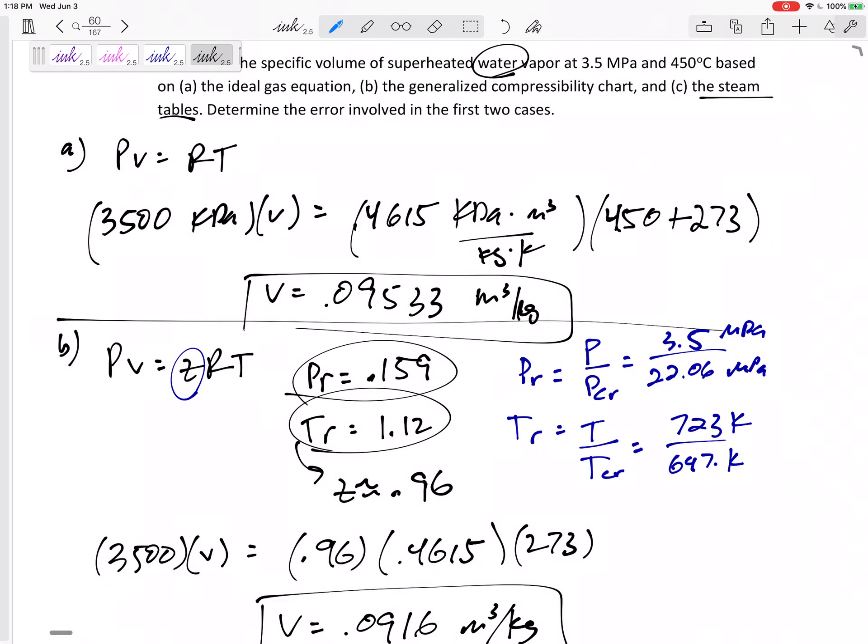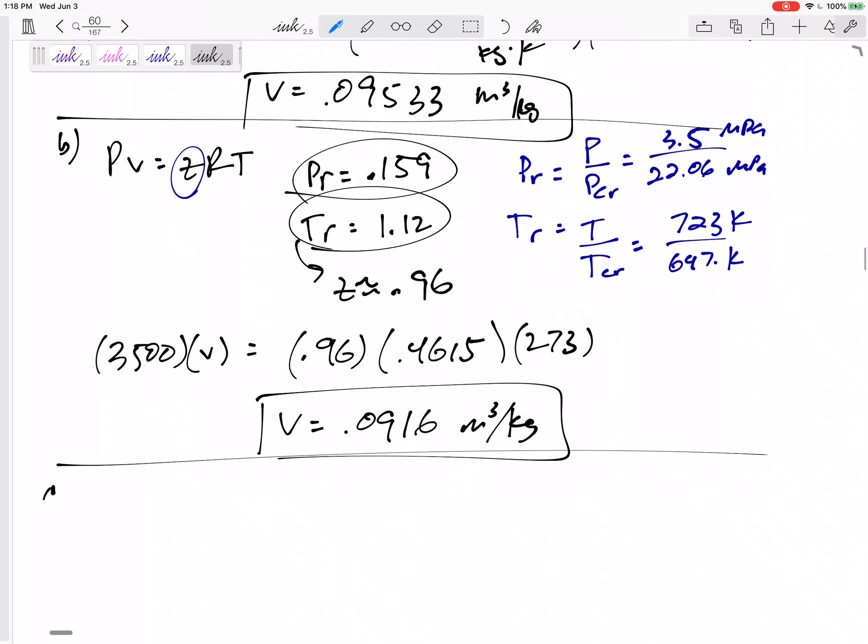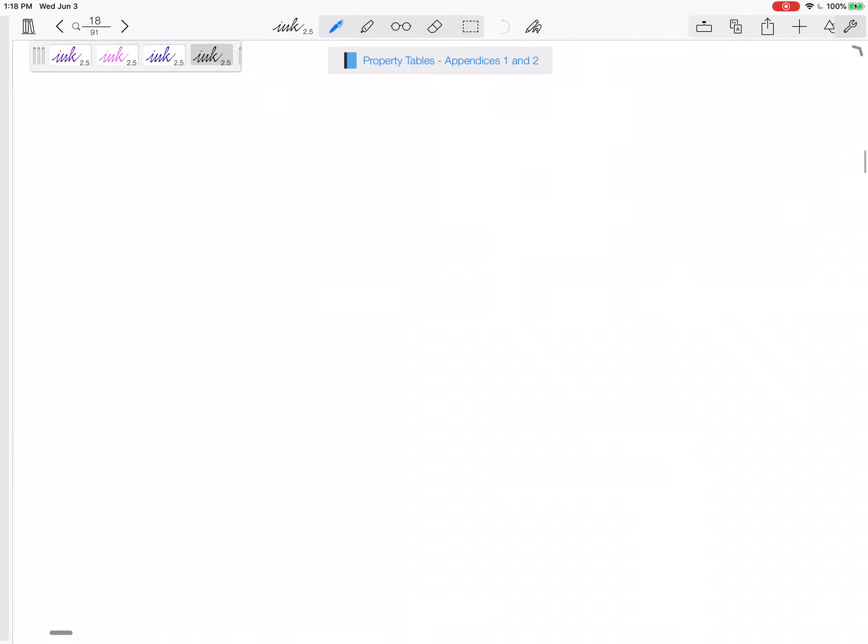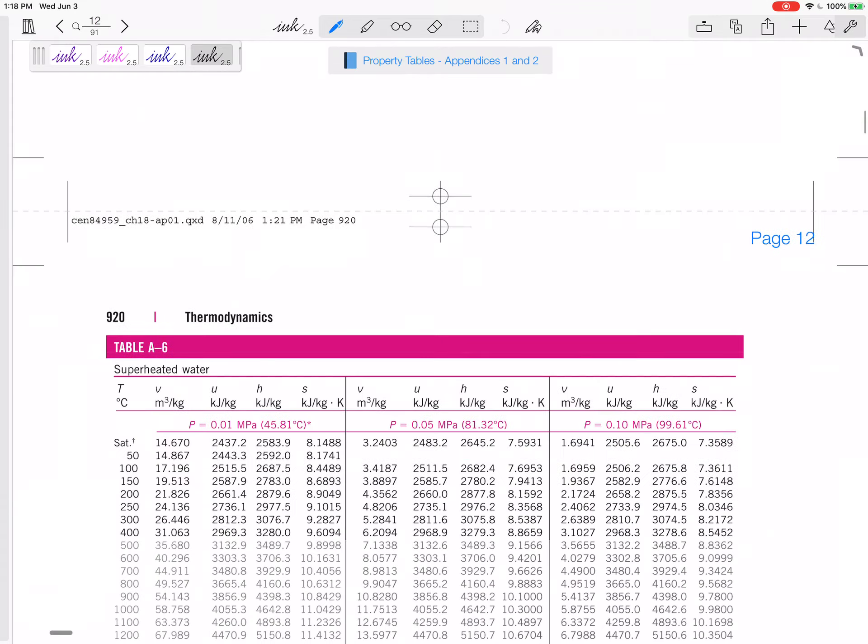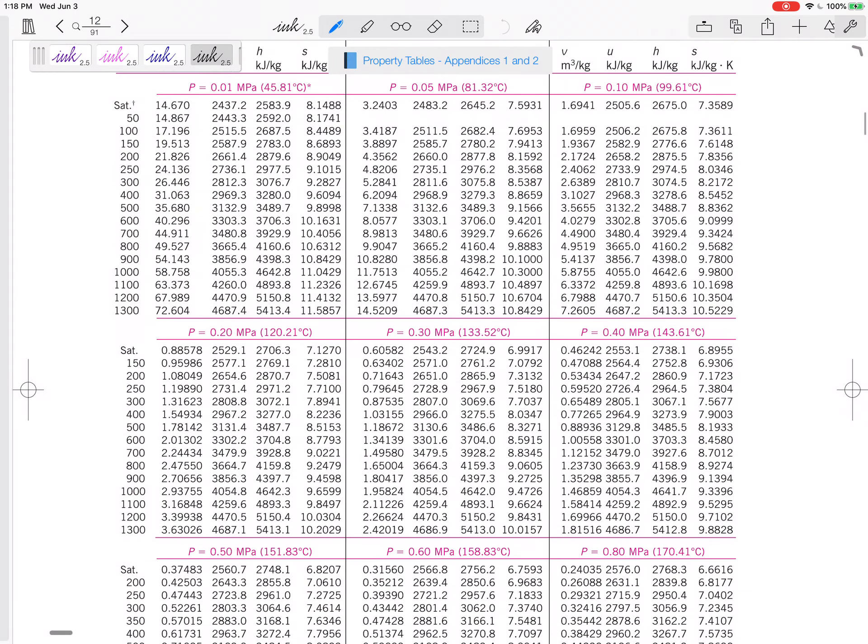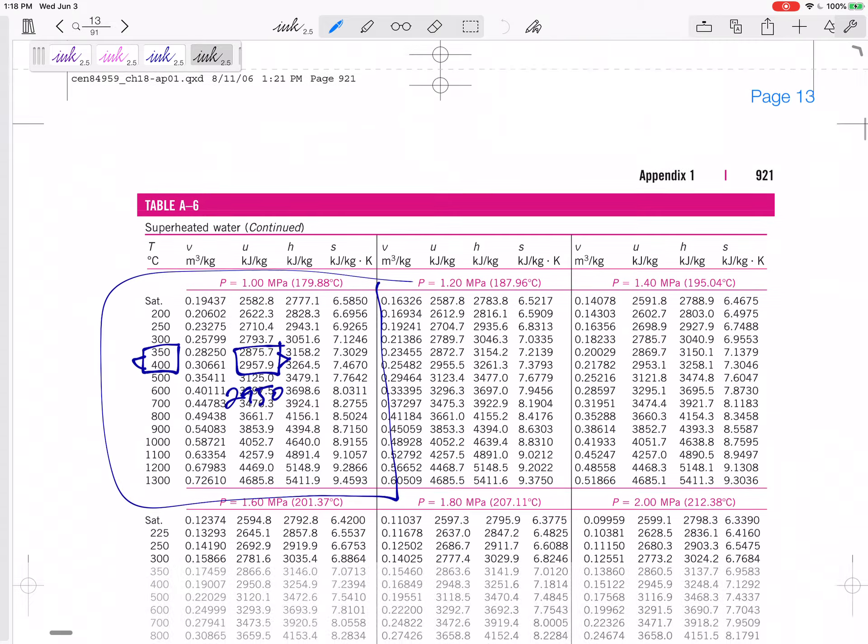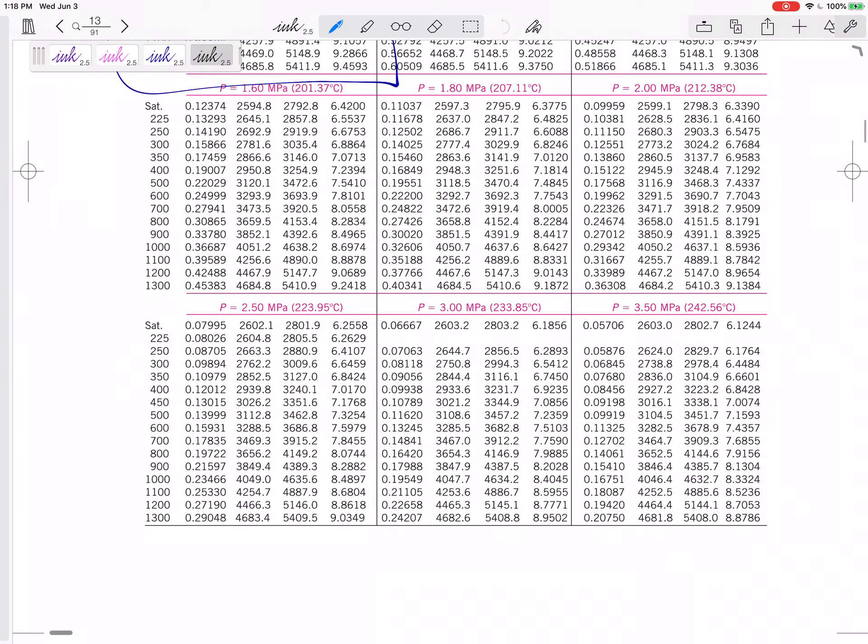All right. But what if we just used the steam tables? What if we had just used the superheated vapor tables, table A6, a pressure of 3.5 MPa, a temperature of 450 degrees C. Table A6, let's go back to table A4, 5, 6, a pressure of 3.5 MPa. Okay, awesome. We have one whole box just for pressure of 3.5 MPa, a temperature.